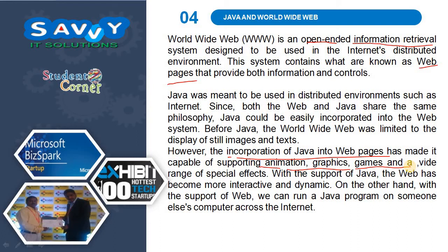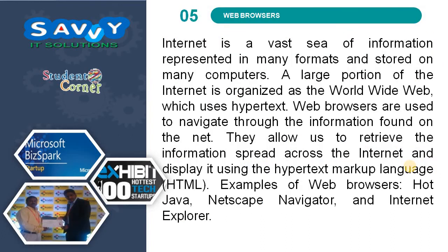With the support of the web, we can run a Java program on someone else's computer across the Internet. A web browser is an interpreter to run HTML, CSS, JavaScript, etc. code. The Internet is a vast sea of information represented in many formats and stored on many computers. A large portion of the Internet is organized as the World Wide Web, which uses hypertext. Web browsers are used to navigate through the information found on the Internet. They allow us to retrieve information spread across the Internet and display it using HTML. Examples of web browsers: Hot Java, Netscape Navigator, Internet Explorer, Google Chrome, Mozilla Firefox, UC Browser, Opera, etc.